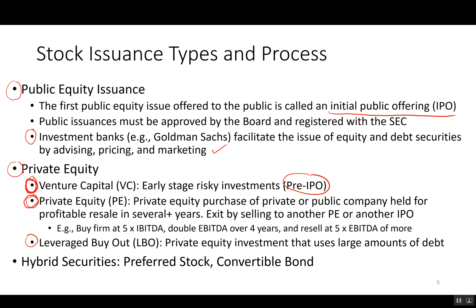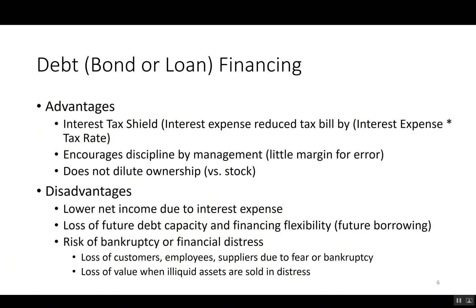There are also hybrid securities — stocks that look like bonds and bonds that look like stocks. For example, preferred stock is a stock with a fixed dividend, so it looks like a bond payment but never matures. Convertible bonds have an interest coupon rate but can at some point be converted into shares of stock at some ratio. They're not a big source of financing, but preferred stock and convertible bonds do exist.